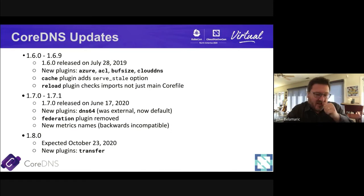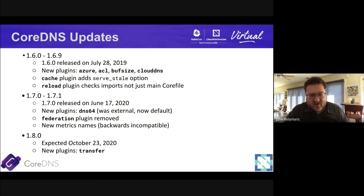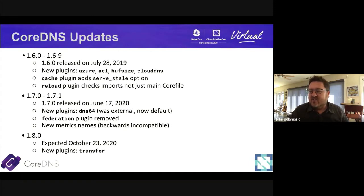The big thing in 1.7 is that we changed the metric names. In previous versions, the metric names didn't follow the conventions that the Prometheus project publishes. We revised the metric names to be consistent with those conventions. But if you've built dashboards on old metrics, this is a somewhat painful transition. In the upcoming 1.8 release, the most interesting thing is a new transfer plugin that handles zone transfer configuration across all backend plugins.